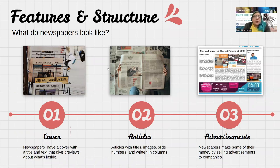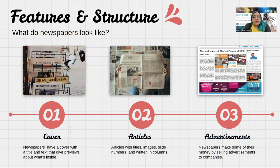Your newspaper is going to have three main features: a cover page, which is the first slide — it might have your school logo or a group photo of the staff. Then you'll have various articles with titles and images. And you can include advertisements, just like in regular newspapers, where people buy ad slots to advertise their business and that money goes to the campus.